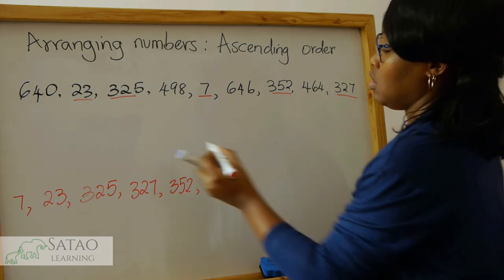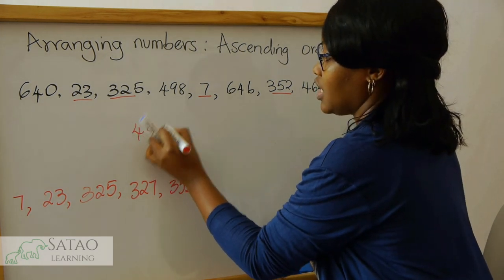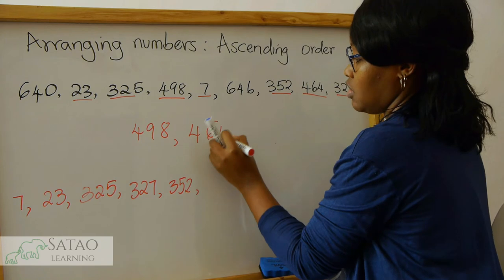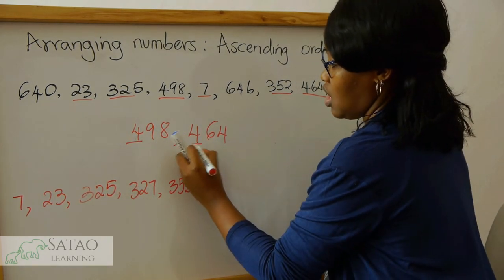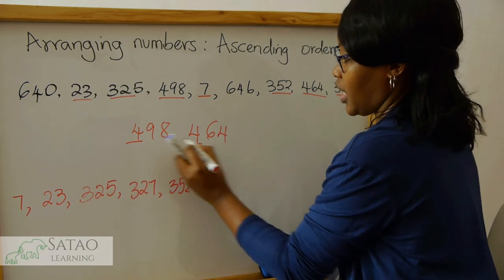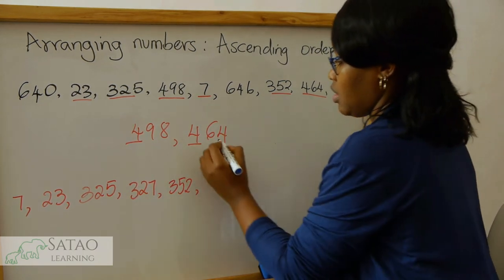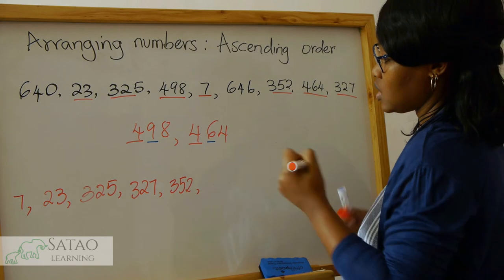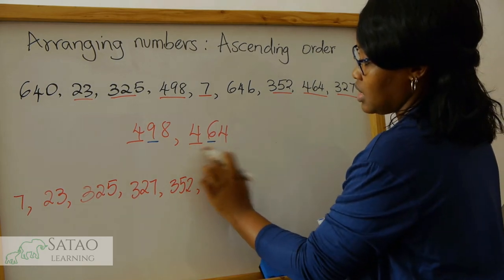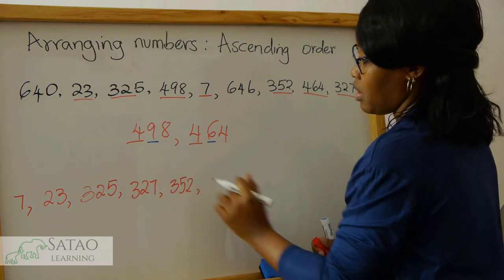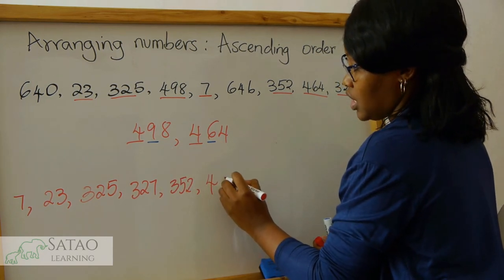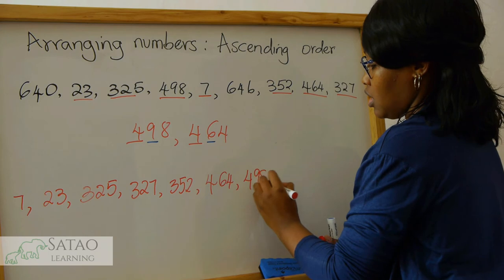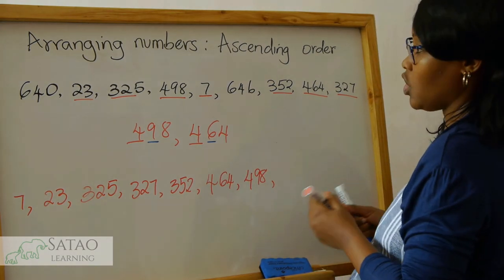The numbers beginning with four are four hundred and ninety-eight and four hundred and sixty-four. The first digit is the same, so we look at the second digit — they are different. Which one is smaller? Six is smaller, so that means four hundred and sixty-four will be smaller than four hundred and ninety-eight. So that is four hundred and sixty-four, then the next will be four hundred and ninety-eight.